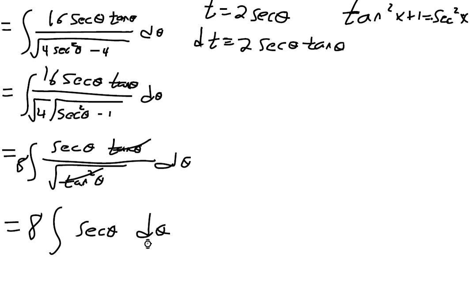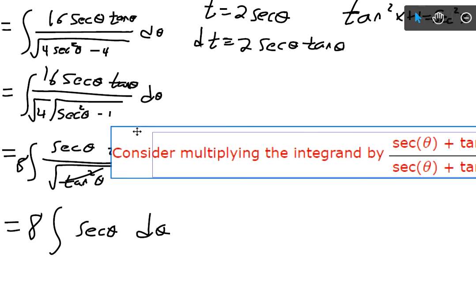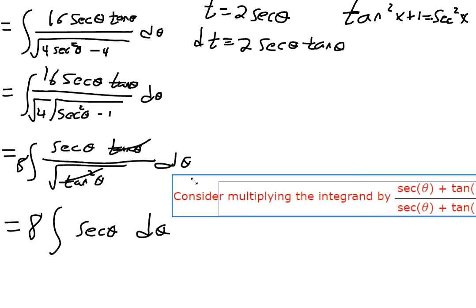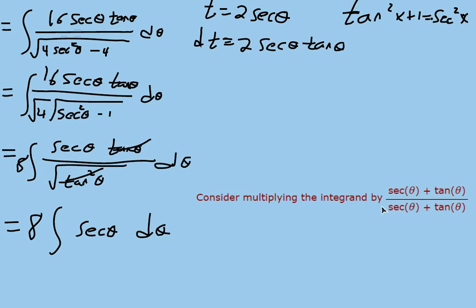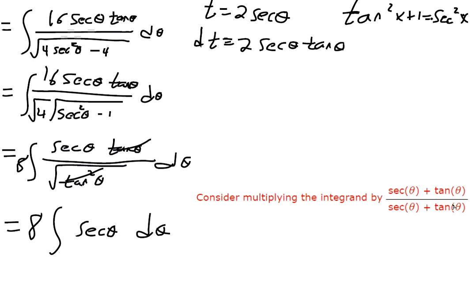So we need to know the antiderivative of secant theta. Something so that we take its derivative and it gives us secant theta. The antiderivative of secant theta is sometimes asked to be memorized by students. But we could do what WebAssign is suggesting we do here. I'm going to multiply this secant theta by secant theta plus tangent theta in the top and in the bottom.